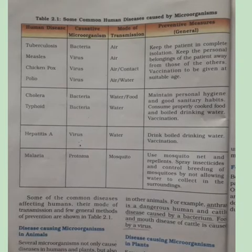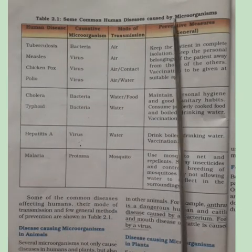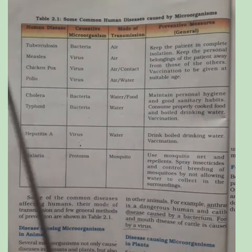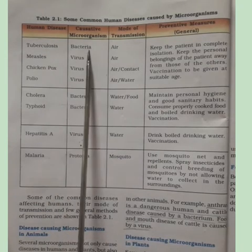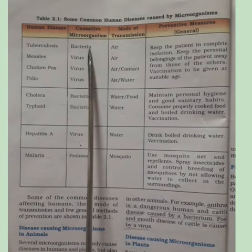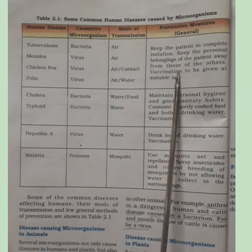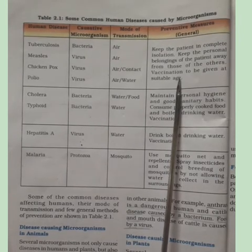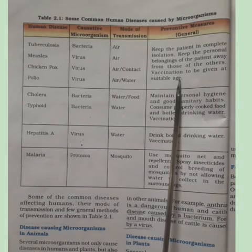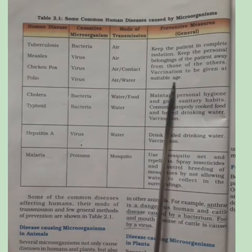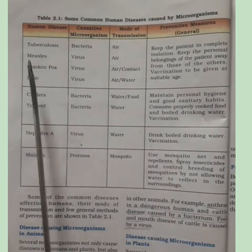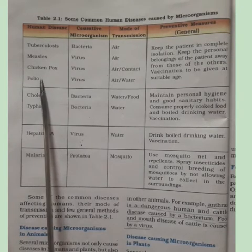Let us study some common human diseases caused by microorganisms. Tuberculosis is caused by bacteria, transmitted through air. Preventive measures include keeping the patient in complete isolation, vaccination, and keeping the patient's personal belongings away from others. The same preventive measures apply to measles, chickenpox, and polio, which are caused by viruses and transmitted through air, water, or direct contact.